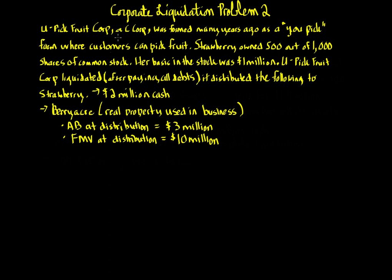In this problem, we have U-Pick Fruit Corp, which is a C corporation founded many years ago as a U-Pick farm where customers can pick fruit. Strawberry owned 500 out of 1,000 shares of common stock. Her basis in the stock was $1 million. U-Pick Fruit Corporation liquidates after paying all its debts and distributes $2 million of cash and Berry Acre, which was real property used in business. The adjusted basis at distribution of Berry Acre is $3 million and the fair market value at distribution is $10 million.